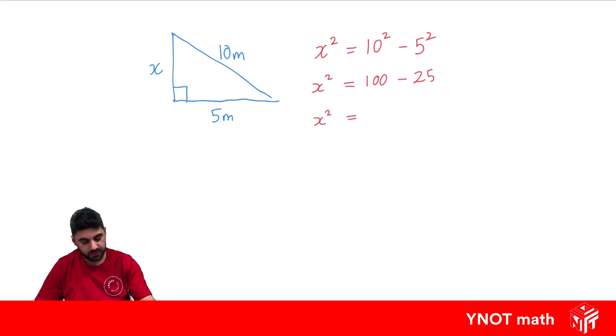So X squared is going to equal 100 minus 25, which is 75. And now we can square root both sides, so we can just find X. So X equals the square root of 75, which is not a perfect square number, which means we're going to get a decimal answer. We could leave it as root 75 as an exact answer. But if they wanted a decimal answer, we could put in the calculator, and we get 8.7 metres to one decimal place.